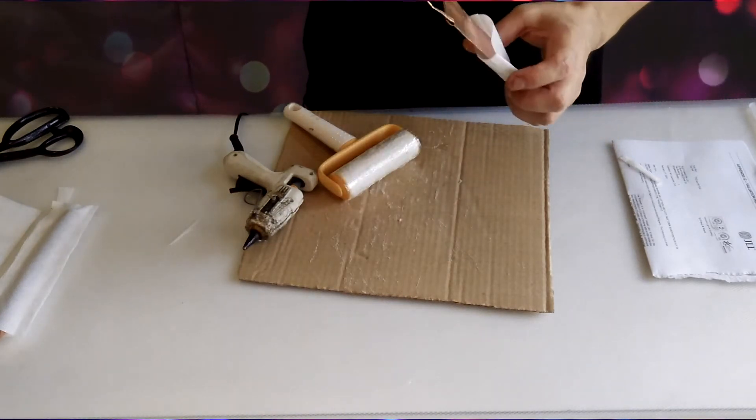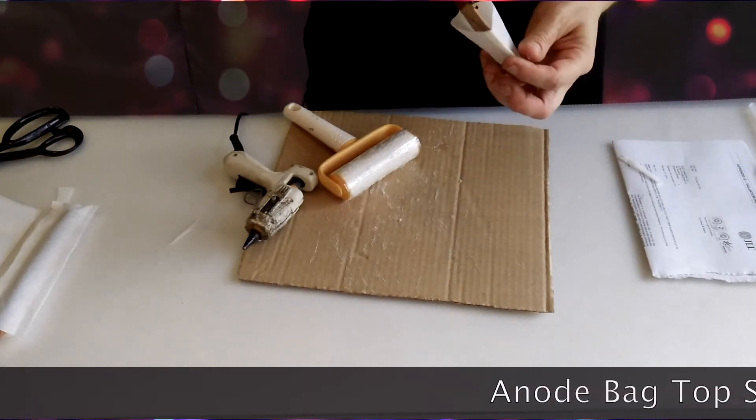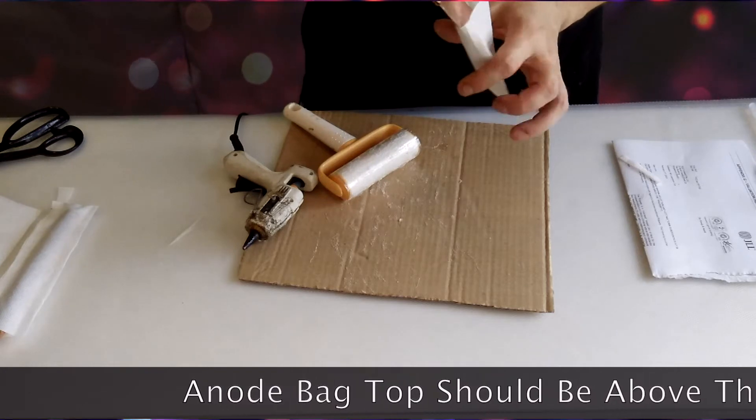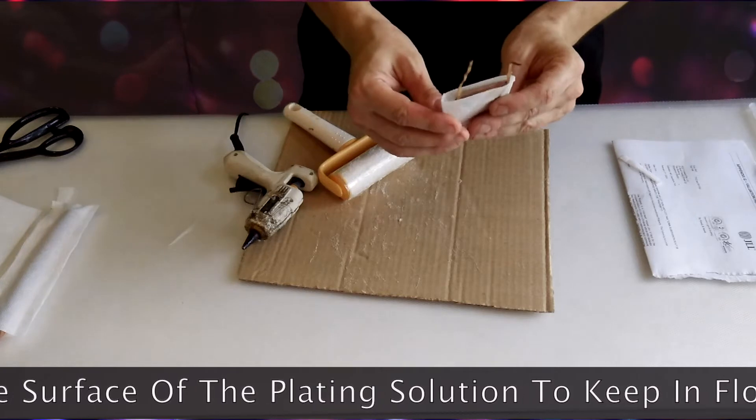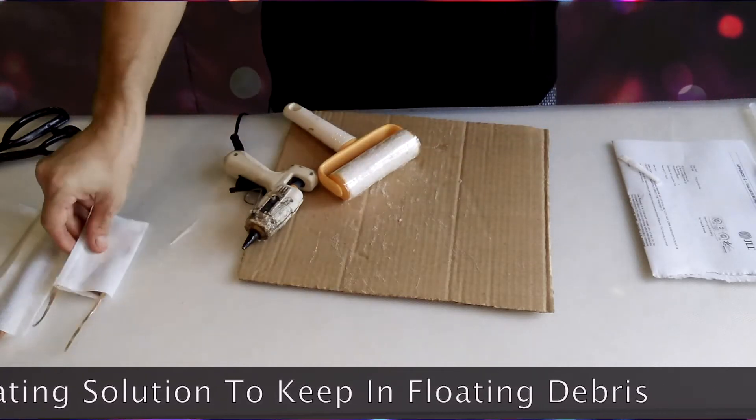And you want it, when you trim it, you want the anode bag to be a little bit higher than the level of the electroform solution so that floating debris doesn't float into the top of the tank. There you go, that's number three.